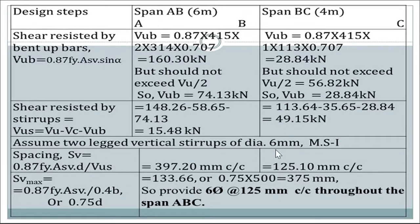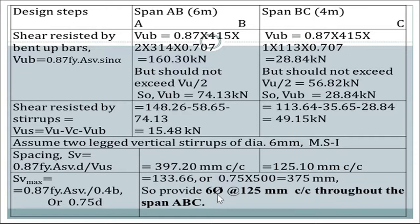Assume 2-legged vertical stirrups of 6 mm diameter mild steel. Spacing SV = 0.87·Fy·ASV·d / VUS: for AB, SV = 397.20 mm; for BC, SV = 125 mm. Maximum spacing should not exceed 0.87·ASV/(0.4·b) = 133.67 mm or 0.75d = 375 mm. Taking the lowest value, provide 6 mm mild steel stirrups at 125 mm centre-to-centre throughout span ABC.